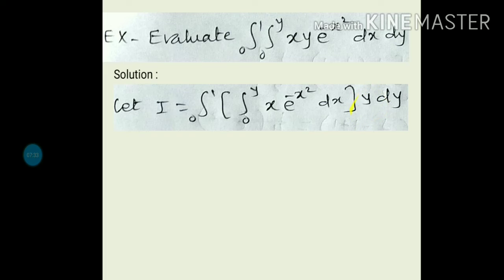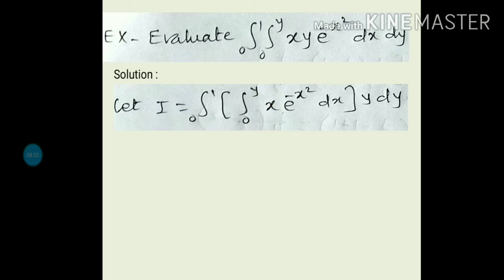Since y is constant with respect to x, we can take it outside the integral sign. Now, how do we integrate x·e^(−x²) with respect to x? It is a product of algebraic and exponential functions. Integration by parts does not work here because we don't know the direct integration of e^(−x²). However, we can use substitution because the function x² and its derivative 2x are both present. So we can go for substitution.